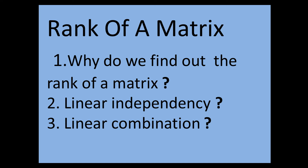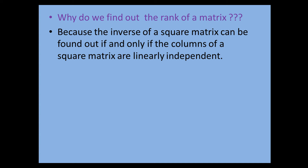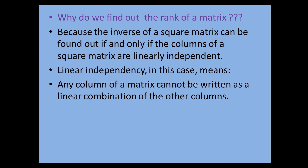Why do we find the rank of a matrix? What is the meaning of linear independency, and what is the meaning of linear combination? In this video we will try to understand all these things. We find the rank of a matrix because the inverse of a square matrix can be found if and only if the columns of that square matrix are linearly independent.